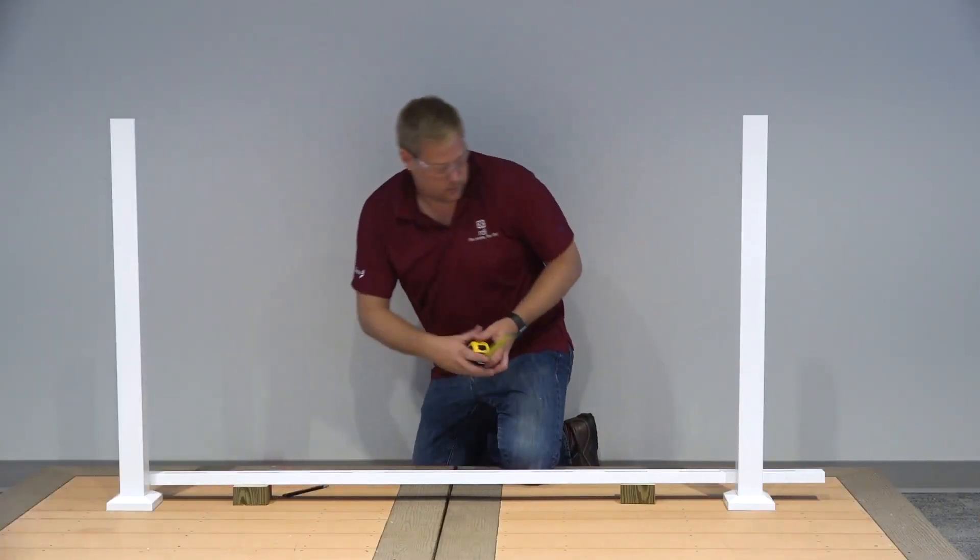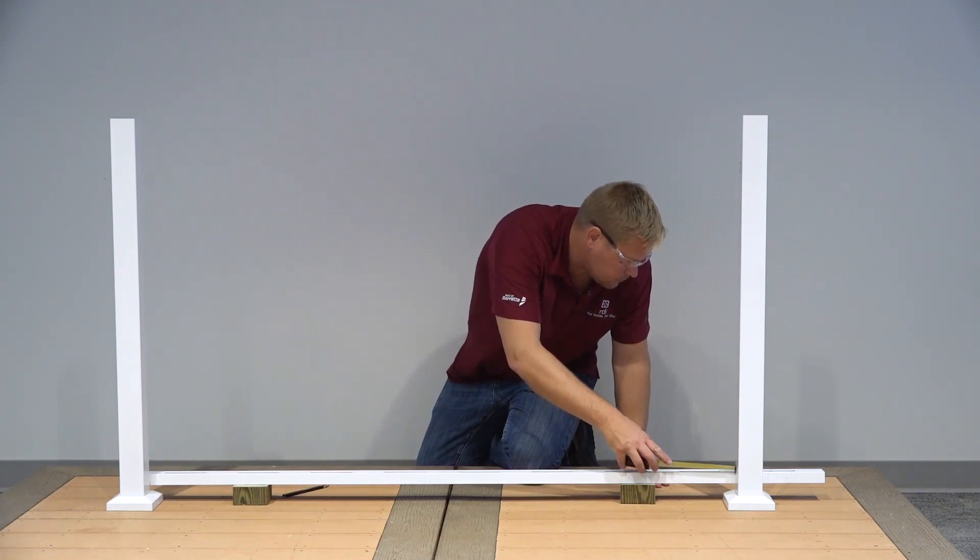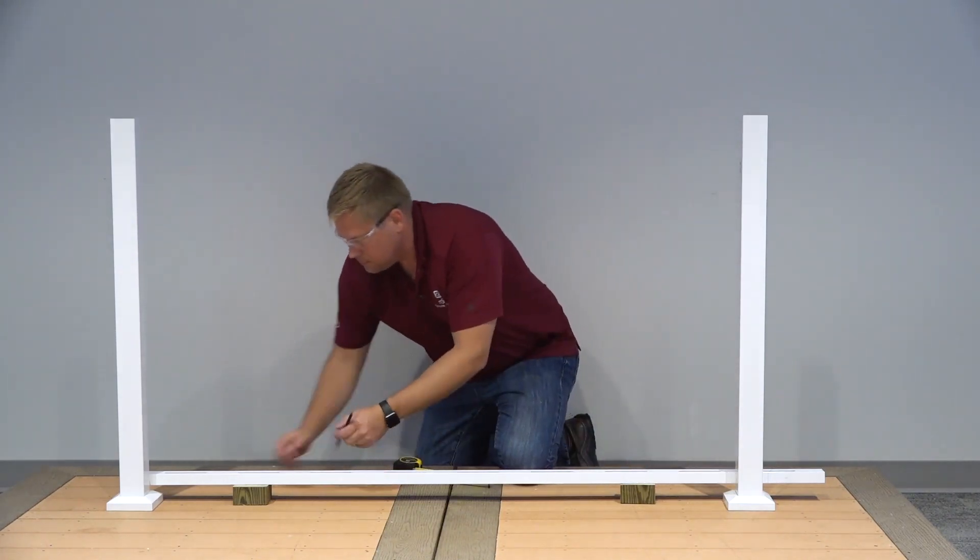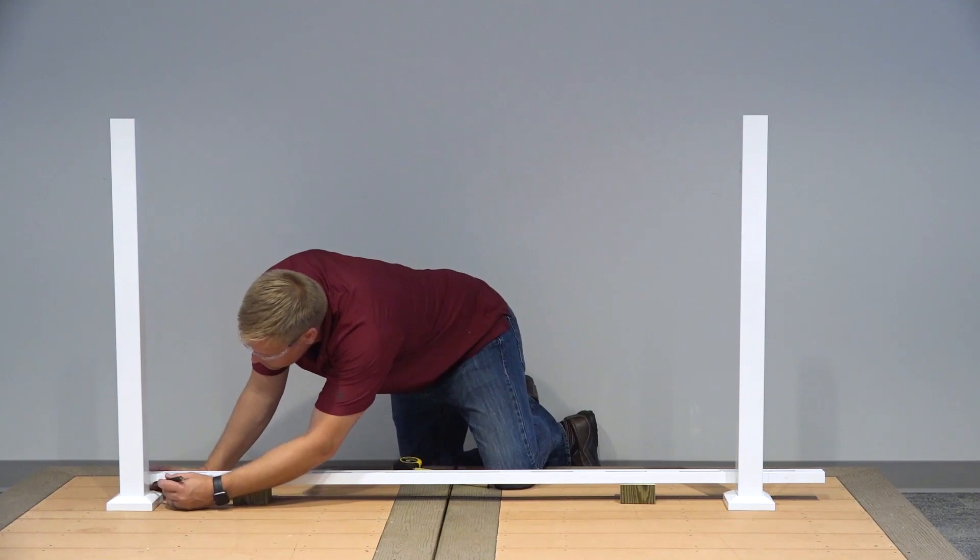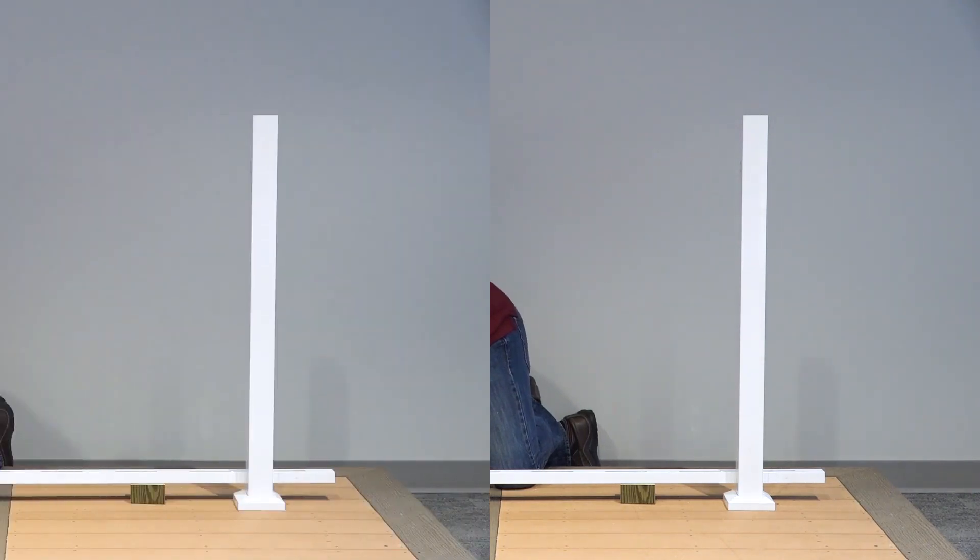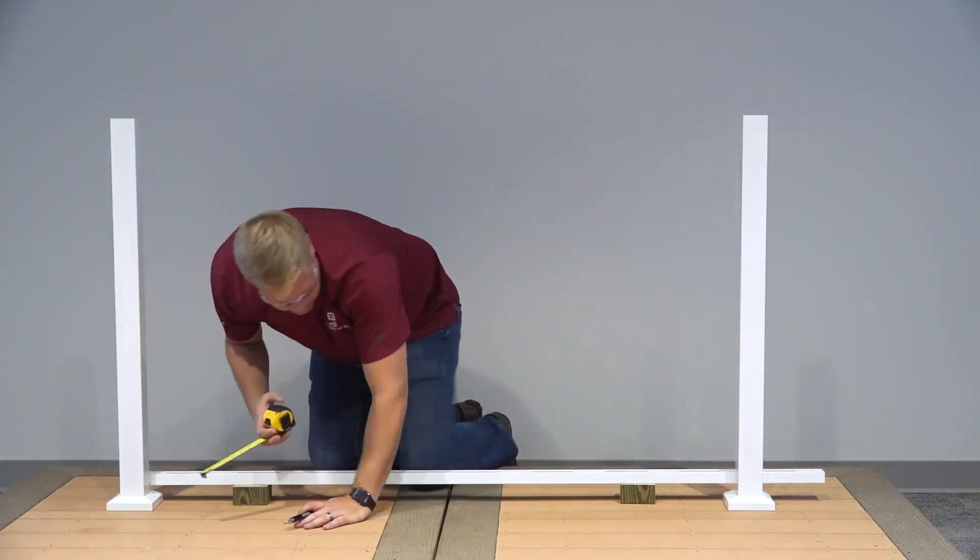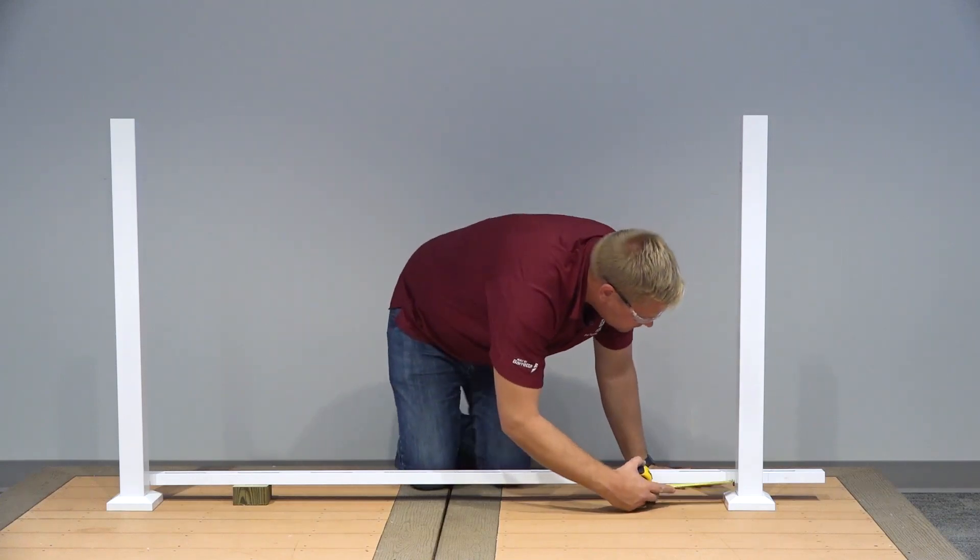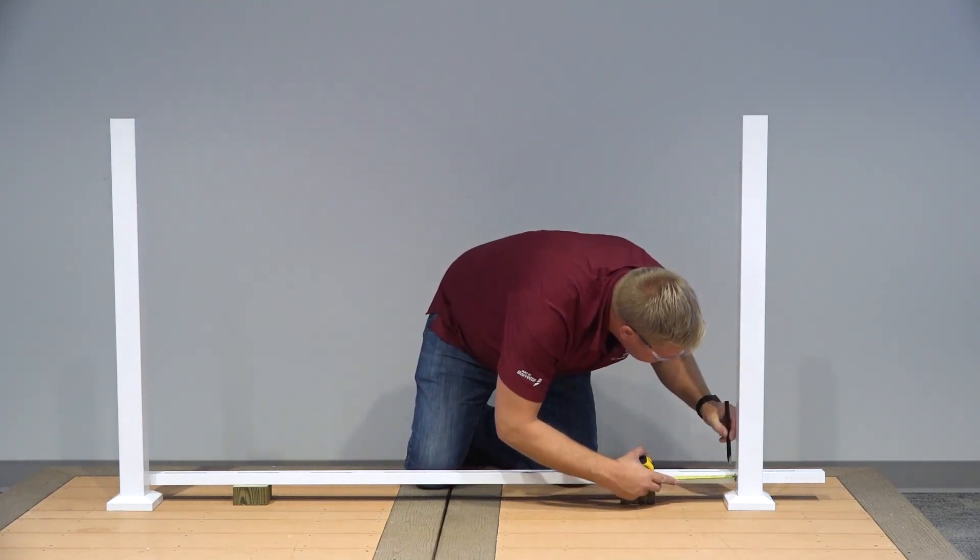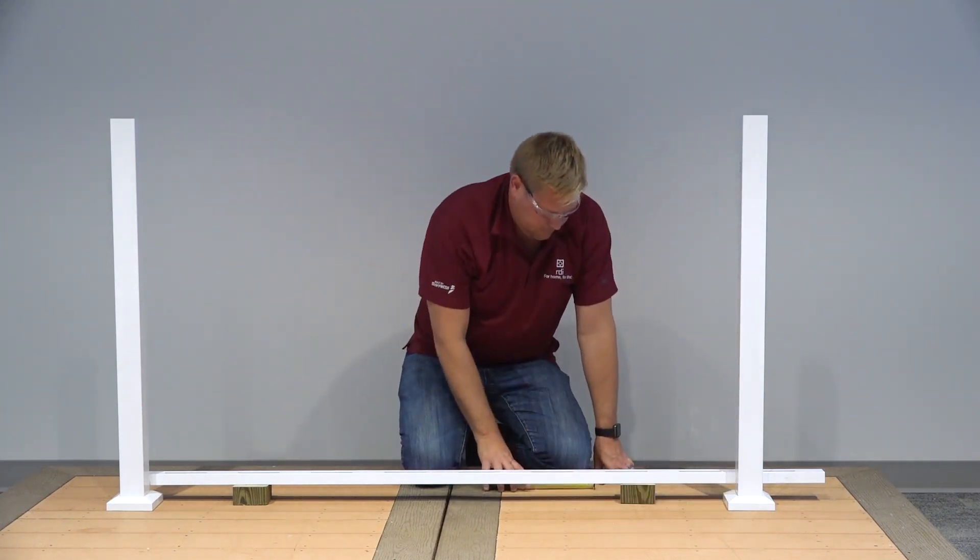Place the bottom beam across the opening and adjust to ensure equal baluster spacing on each end. Mark the rail panel at the post face at both ends of the beam. Measure 1 1/4 inch from the marks towards the center of the bottom beam and cut the top and bottom beams with the channel inside at both ends using a carbide tip blade of at least 60 teeth.